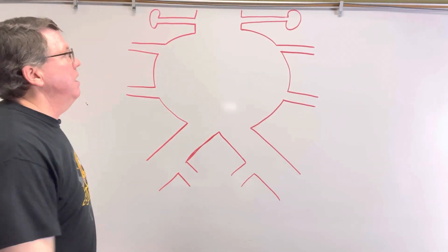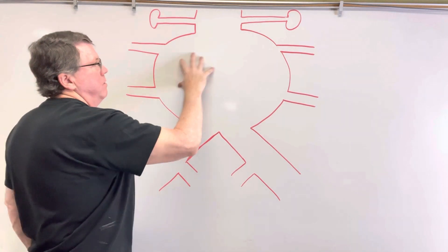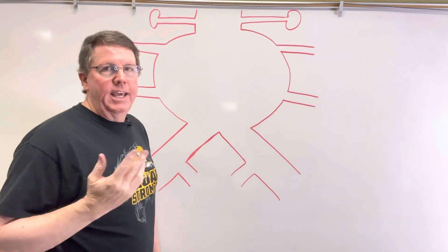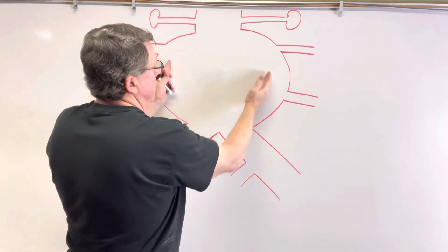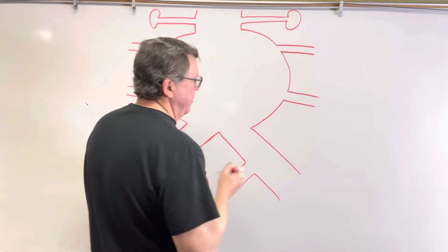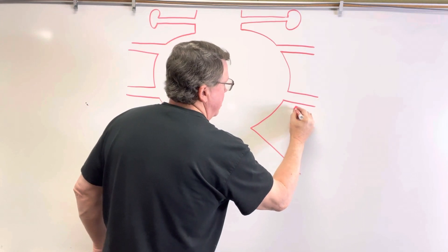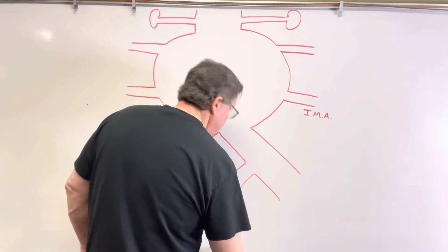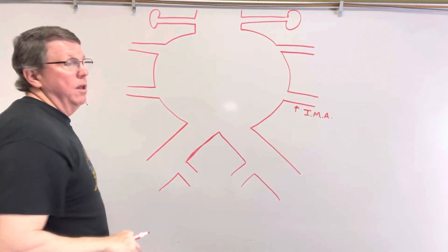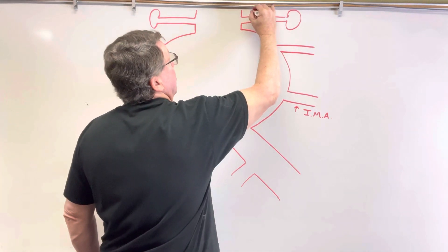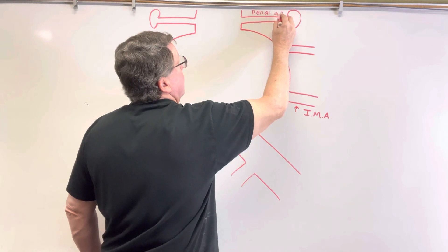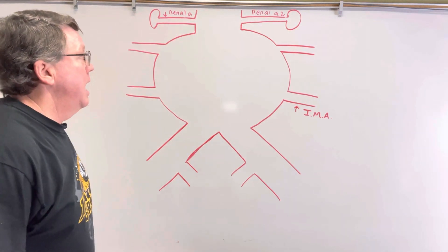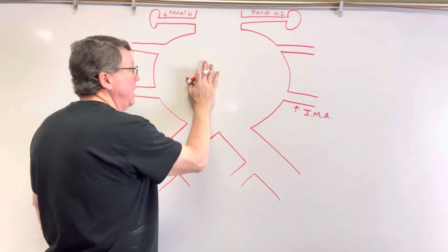Now let's take a look at this — I've already drawn my aneurysm here. When we're talking about abdominal aortic aneurysm, we call it triple-A (AAA). So this is my aneurysm — it's just a big bubble in there. These are my lumbar arteries, this is the inferior mesenteric artery, and this is my renal artery. We are interested in the infrarenal abdominal aorta here.